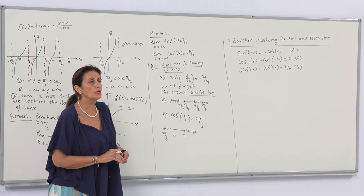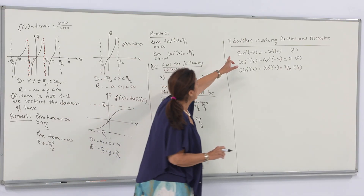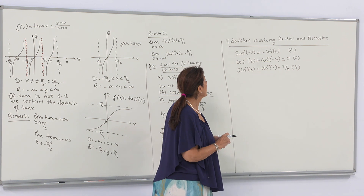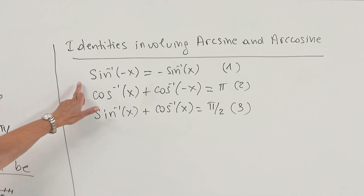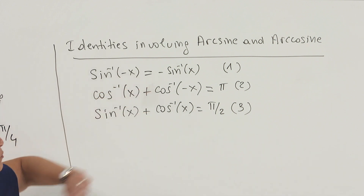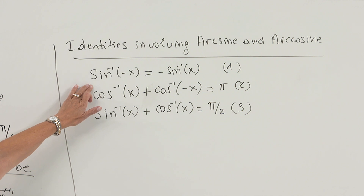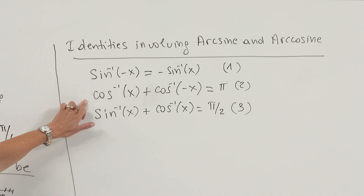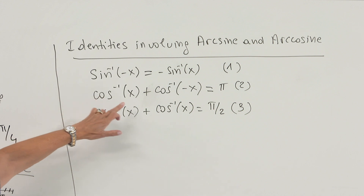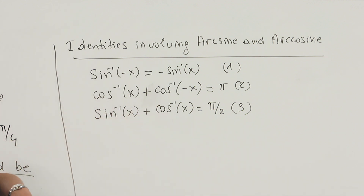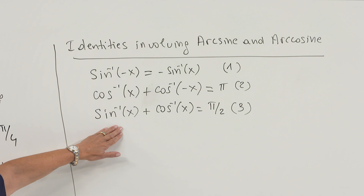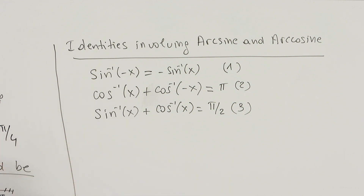Now I want to give you identities involving arcsines and arccosines. First, the inverse sine of minus x equals minus inverse sine of x — this shows the function is odd. Second, inverse cosine of x plus inverse cosine of minus x equals π. Third, inverse sine of x plus inverse cosine of x equals π/2. I will prove just one of these to show you how the proof works.